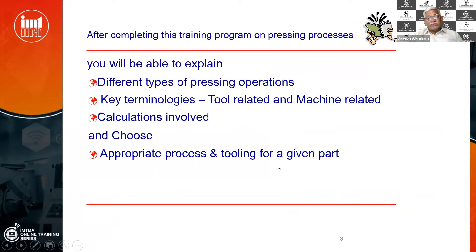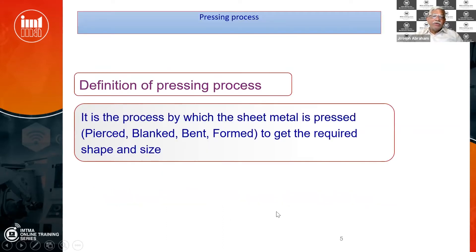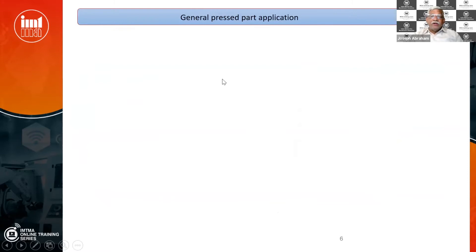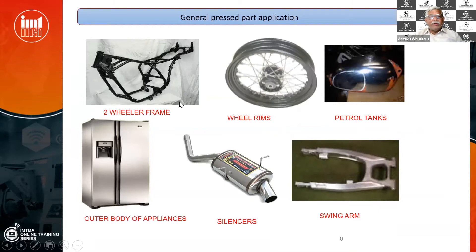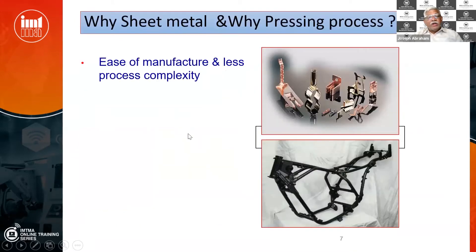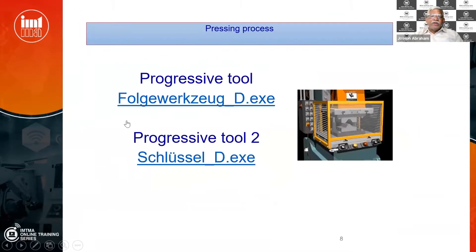Then we cover the appropriate processes and tooling for a given part. If you look at the types of sheet metal processes, there are many different types. These will be useful for two-wheeler frames, wheel rims, petrol tanks — sheet metal components are used everywhere. We will also see what are the different progressive tools, etc.